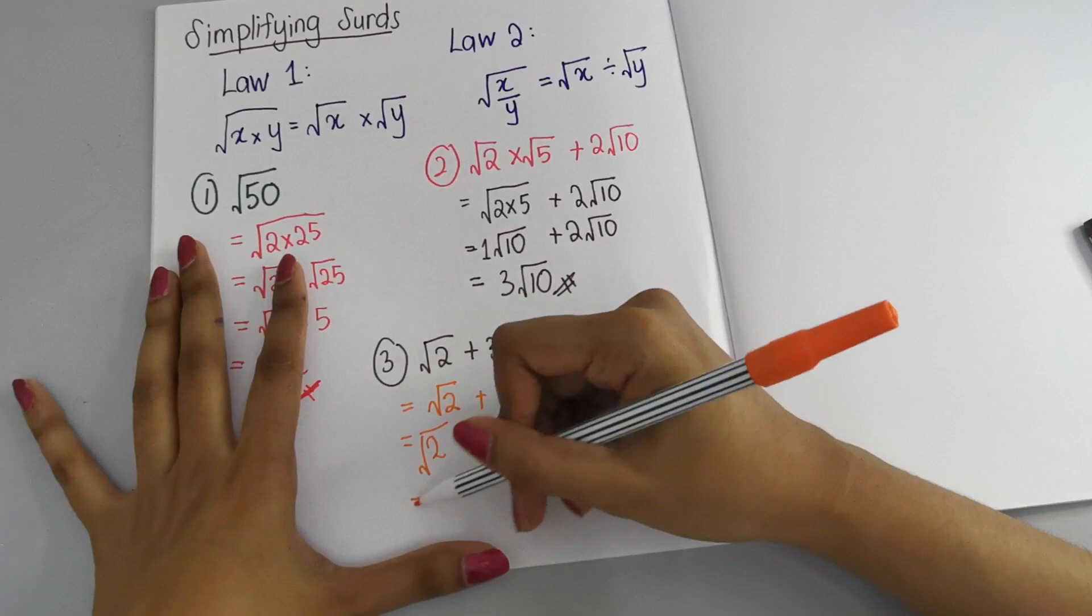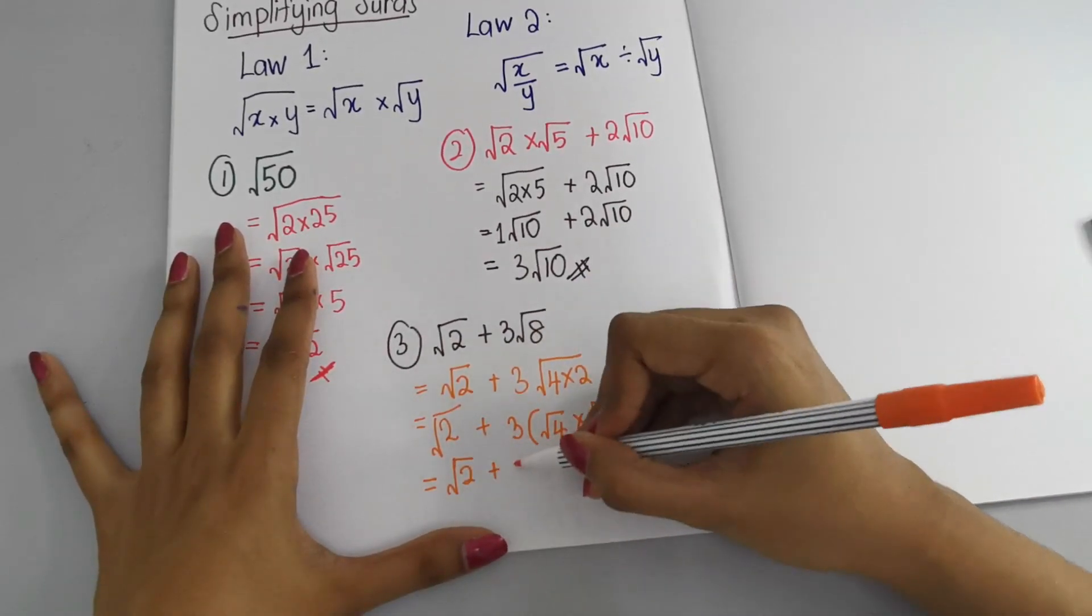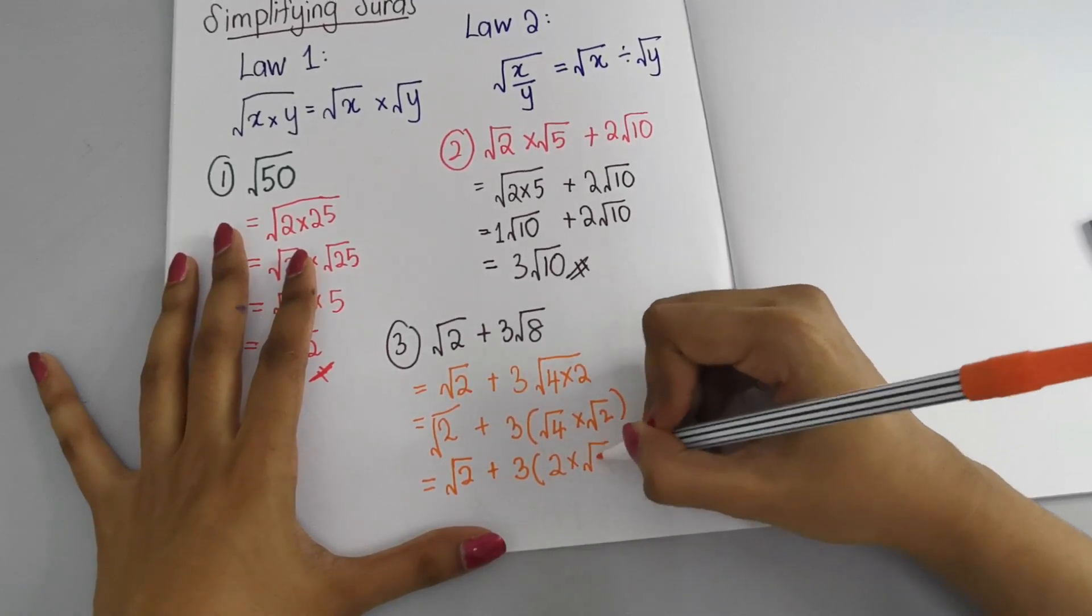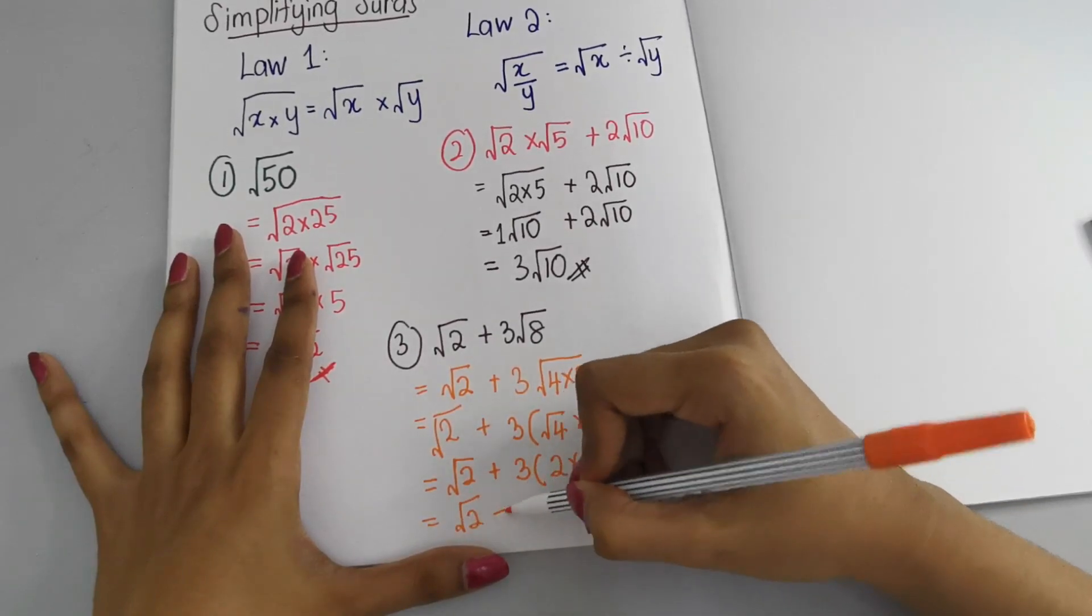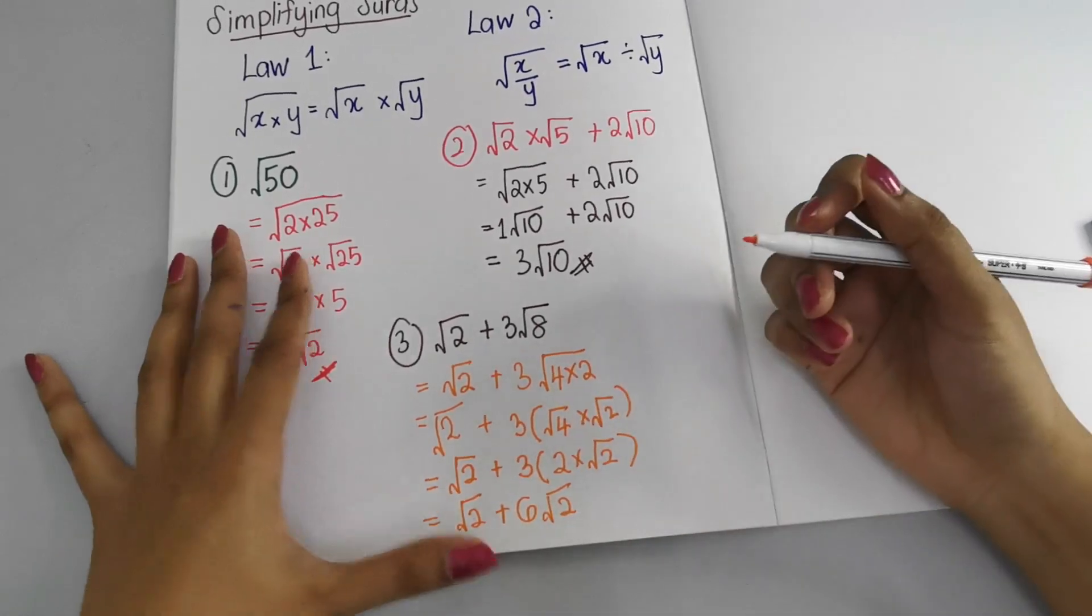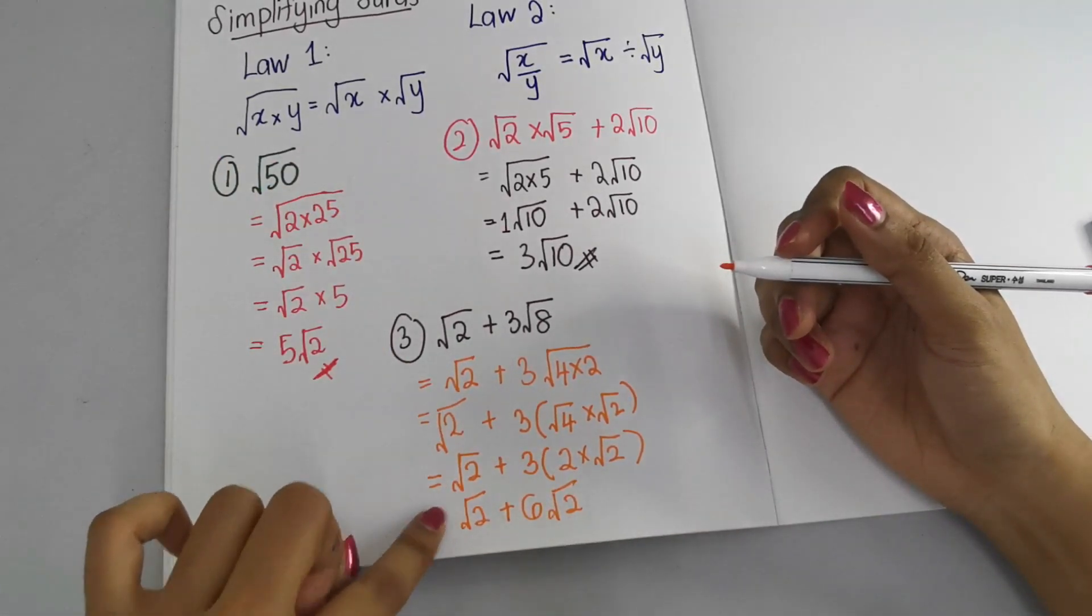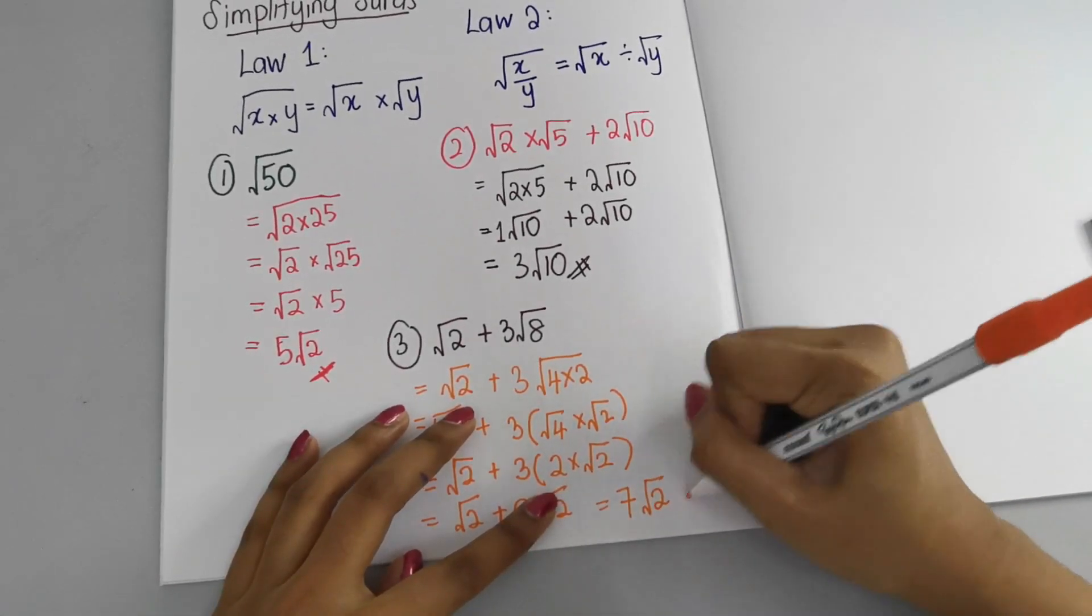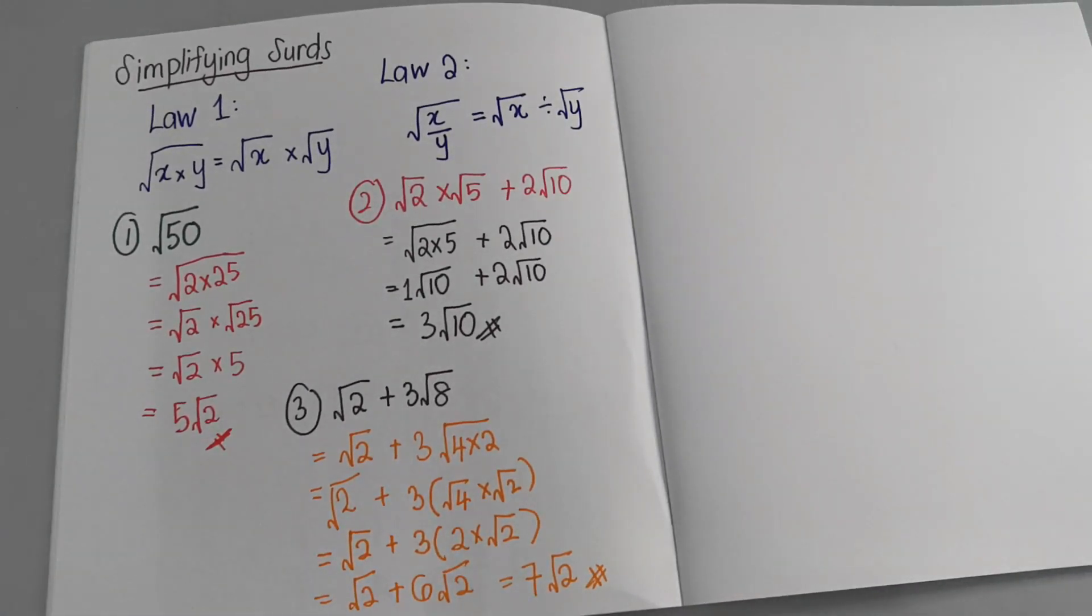So here I'm going to write √2 + 3√4 × √2. Again, √2 + 3 × 2 is 6, so 6√2. We have √2 and √2. Here the number is 1, so 1 + 6 gives us our final answer: 7√2.